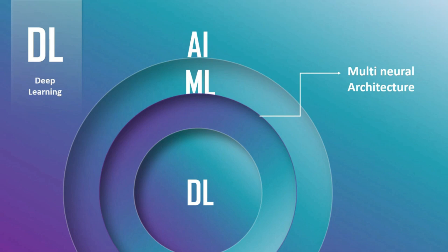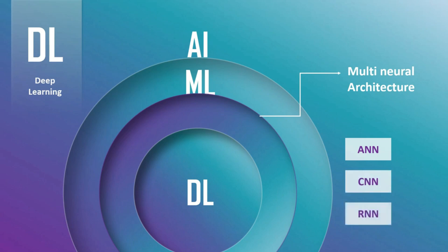In deep learning you have various techniques. The first is ANN - Artificial Neural Network. The second is CNN - Convolutional Neural Network. The third is RNN - Recurrent Neural Network. Most problems where data is in the form of numbers will be solved with ANN. If the input is in the form of images, we use CNN. If the input is time series kind of data, we use Recurrent Neural Network.